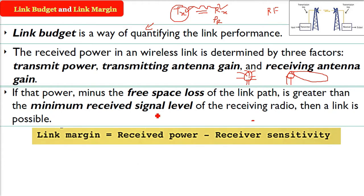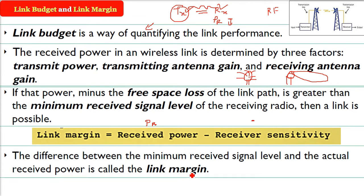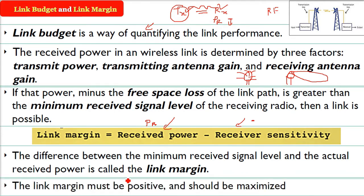The receiver has certain sensitivity—how much it can demodulate and understand. That is the receiver sensitivity. Link margin is received power at the receiver minus receiver sensitivity. The difference between the minimum received signal level and the actual received power is called the link margin. The link margin must be positive; we need to maximize it.